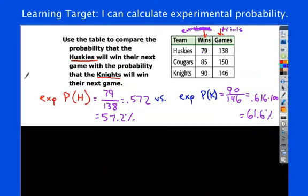So, based on this, who's more likely to win their next game? Well, if you're going just strictly off wins, which I realize there's more to it than that. If you're going strictly off data from the past, the wins, you would say that the Knights are more likely to win. Because they have a higher experimental probability of winning.